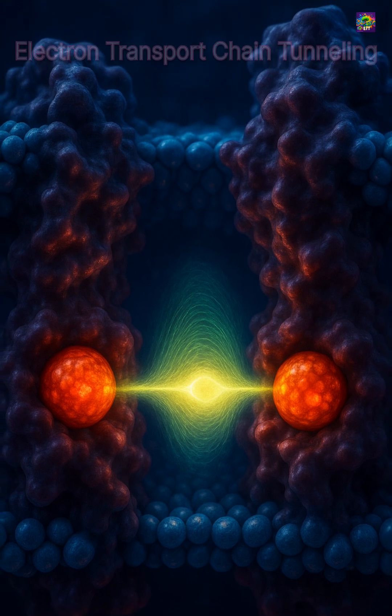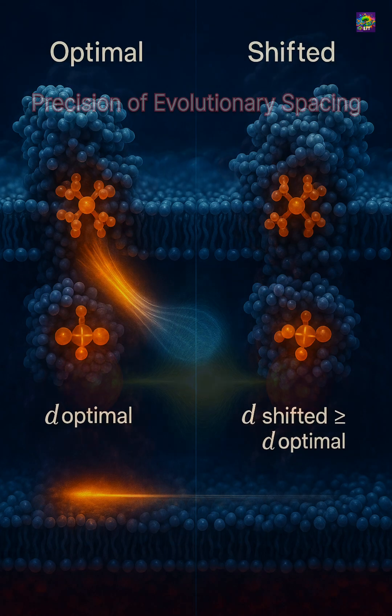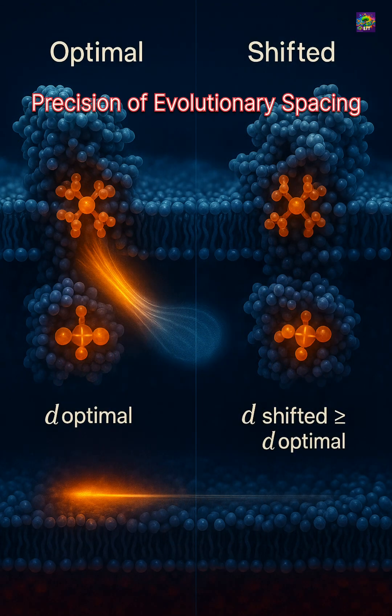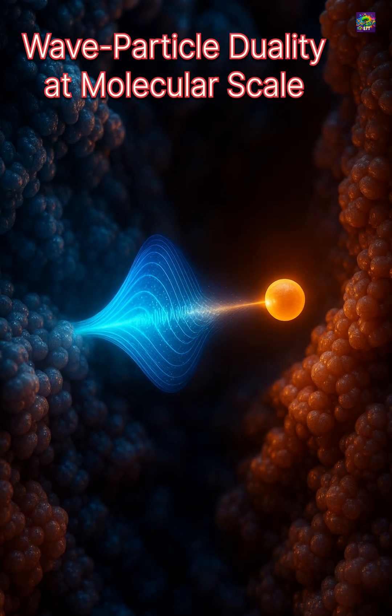Mitochondrial proteins are arranged so that important electron-carrying sites sit at distances where tunneling becomes possible. Even a small shift in spacing can change the speed dramatically, which shows how precisely evolution has arranged these structures.